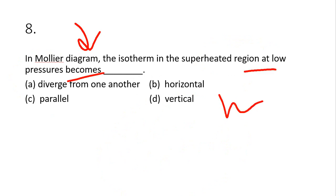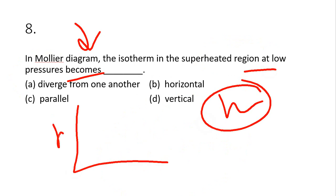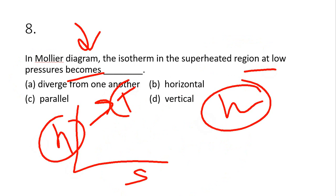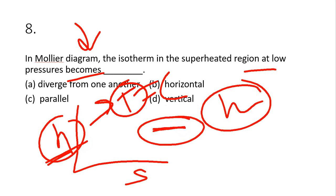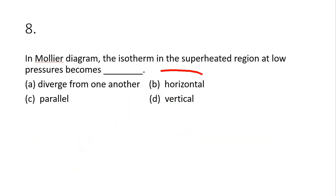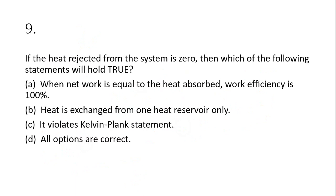Question 8: in the Mollier diagram, lines in the superheated region at low pressure become horizontal. This is because in the Mollier chart enthalpy is a function of temperature — at constant temperature, enthalpy is constant, so the line becomes horizontal. Option B is the correct answer.